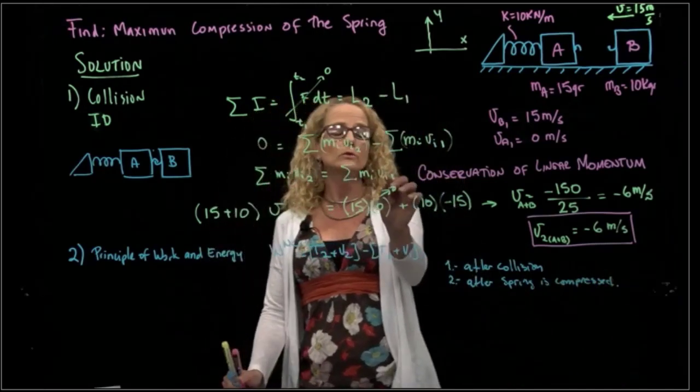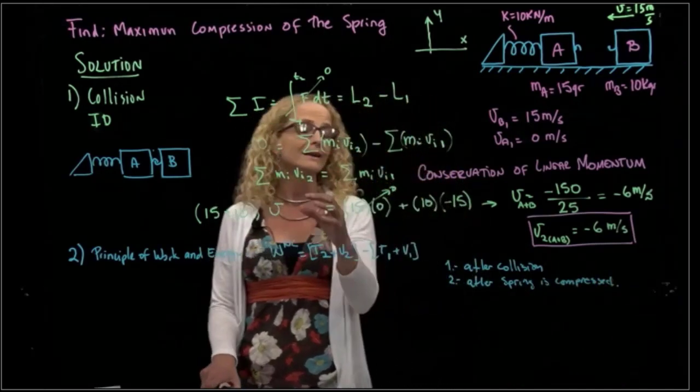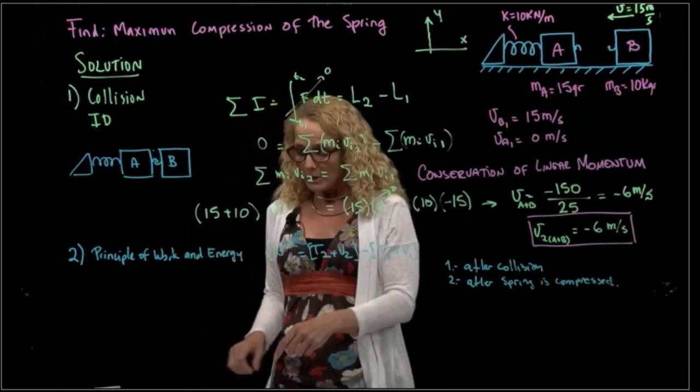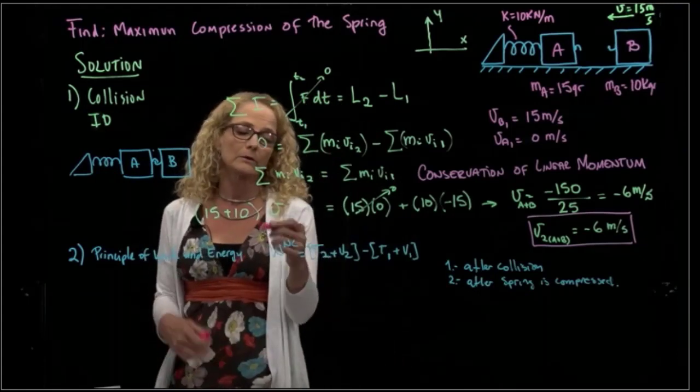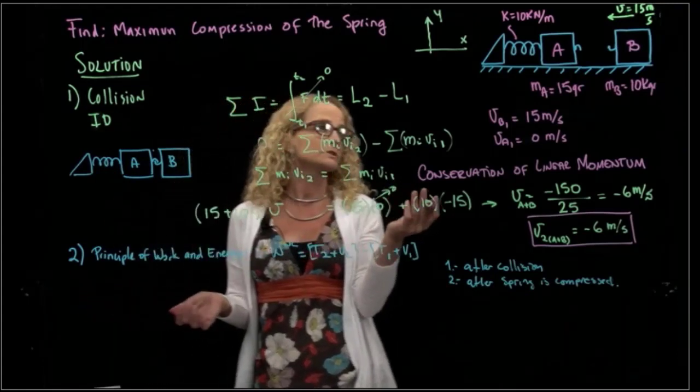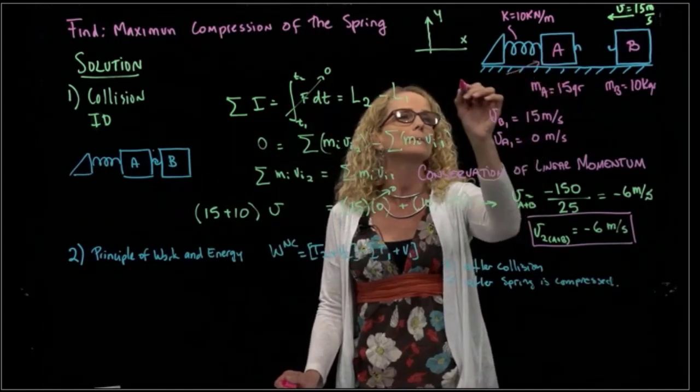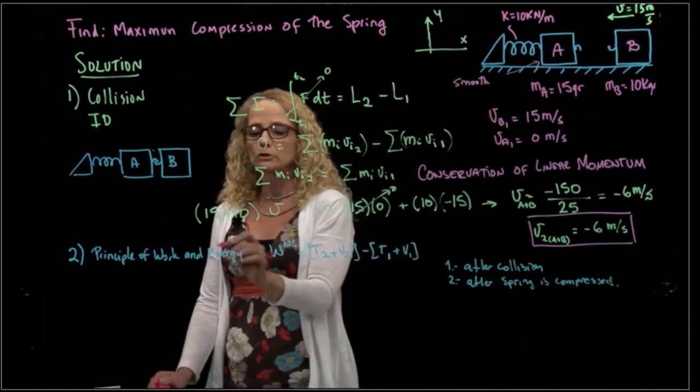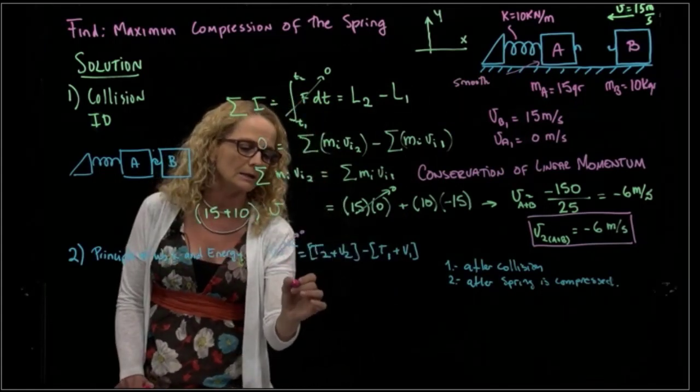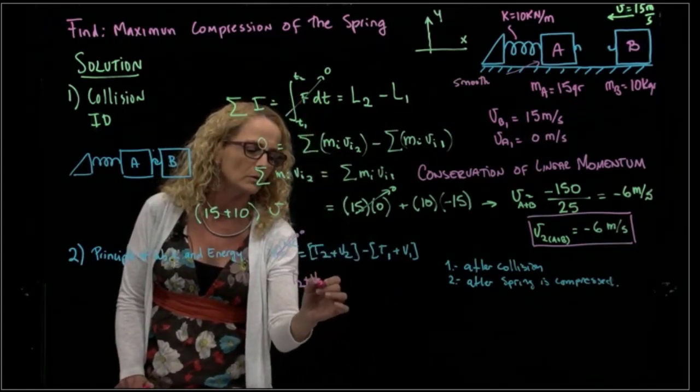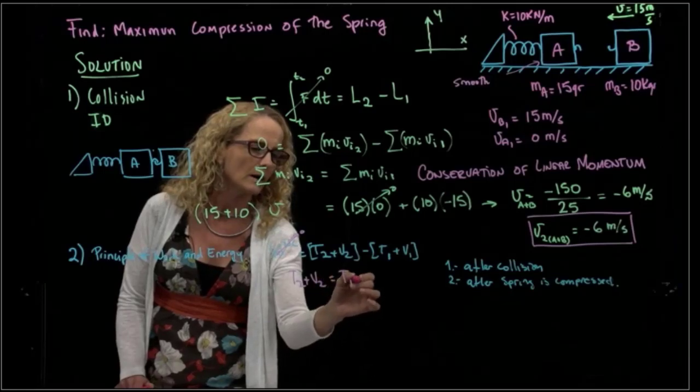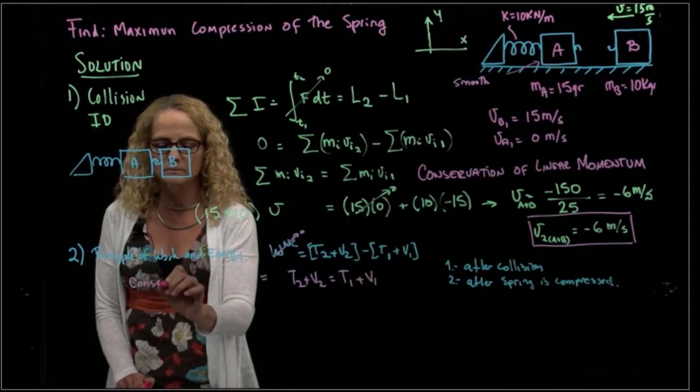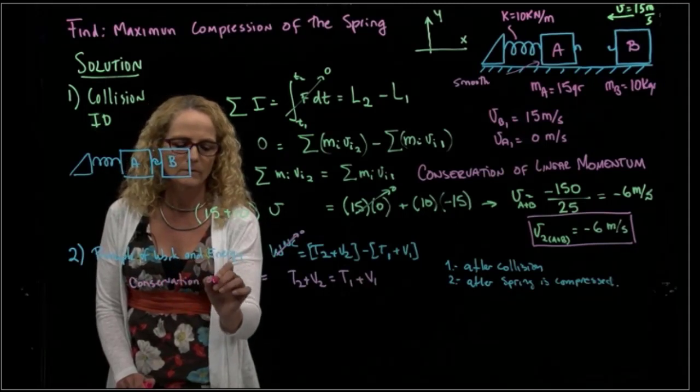So these values, one and two, are different because we are analyzing a different stage of the problem. So since our non-conservative forces are zero because this is a smooth floor, so we don't have friction, so work is zero. We can say that T2 plus V2 equals T1 plus V1, and this is conservation of energy.